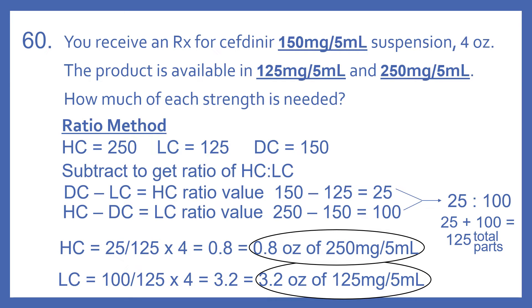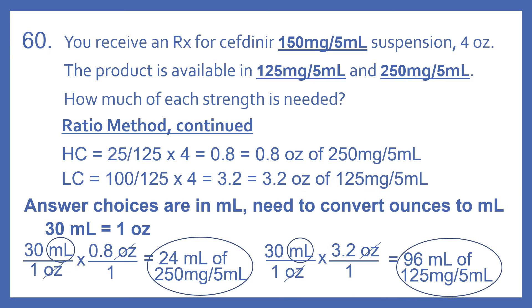For the low concentration we do the same thing, except with its ratio. So 100 divided by 125 times the amount needed, 4, gives us 3.2 ounces of 125 mg per 5 ml. The answer choices are in milliliters, so we need to convert. 30 milliliters per one ounce times 0.8 ounces — the ounces cancel — gives us 24 milliliters of 250 mg per 5 ml.